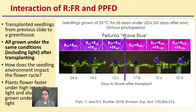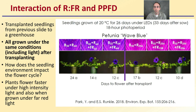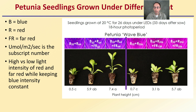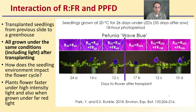Looking at the interaction of red, Far Red, and PPFD — photosynthetically active photon flux density — the seedlings from the previous slide were transplanted to a greenhouse and all grown under the same conditions after transplant. Interestingly, plants that started under different light treatments were then all moved to consistent greenhouse lighting. Plants flower faster under high light intensity and also when grown under Far Red light during the seedling stage. With equal blue and red only, they weren't even flowering. The blue with intense red and Far Red produced the quickest days to flower — showing seedling-stage wavelengths can have lasting impacts.